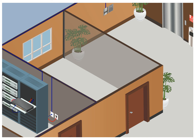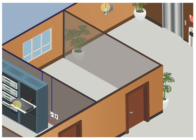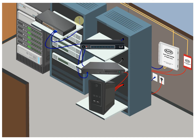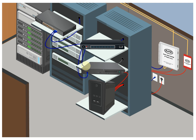This is the wiring demonstration for a supervised IP system. Note: the initial wiring setup for a supervised system follows the same steps as the non-supervised system. Take the Ethernet connection from the IP call box to the local network switch. This local network switch is then connected to the main floor network switch and/or router. Connect the IP command center's distribution module to the building router via an Ethernet cable. This router will then connect to the main floor network switch via an additional Ethernet cable. Note: for larger buildings over approximately 300 feet, an additional network switch is required to extend the network. Connect the WAN port of the VOIP interface card inside the distribution module to the building router via an Ethernet cable.